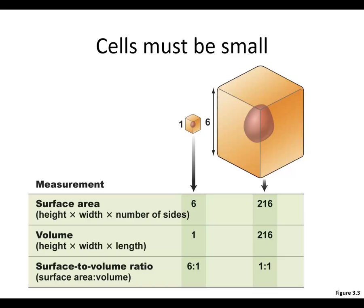The reason cells have to be small is in order to satisfy what's called a surface area to volume ratio. Basically what that means is — let me ask you this. Cells are made of you, yeah? What do cells need to stay alive? What do your cells need to stay alive? Oxygen. What else? Nutrition — food. And anything else? Water, and the ability to get rid of their metabolic wastes.